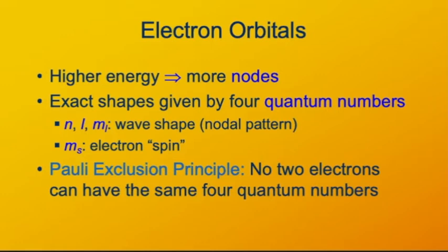So what this means is that you can't just have all of the electrons in an atom at the lowest energy. You can only have two at the lowest energy. One with spin up, one with spin down. Then the next electron has to go into a higher energy wave with more nodes in its standing wave pattern.